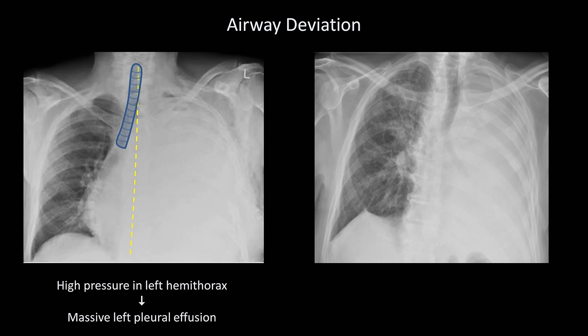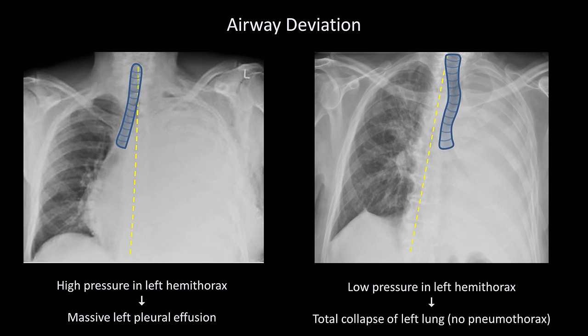The x-ray on the right is a little trickier — it would be easy to mistake this for a pleural effusion as well. However, drawing our midline, which ends up being crooked because the patient is crooked, you can see that the trachea is deviated towards the whited out side. Therefore, there must be low pressure in the left hemithorax, which can be due to collapse of the left lung — not from a pneumothorax, but rather from something like left main bronchus obstruction from a tumor.